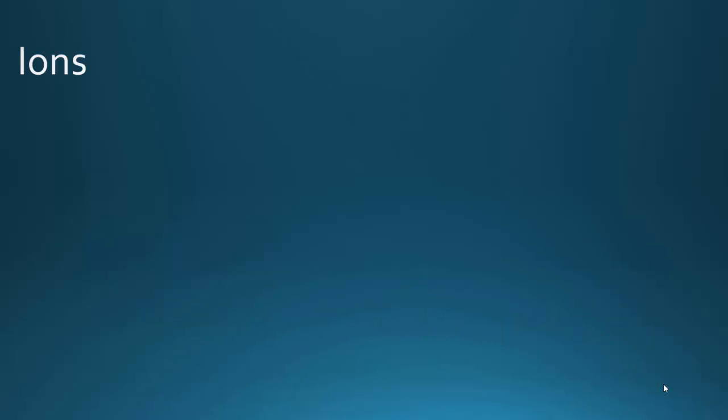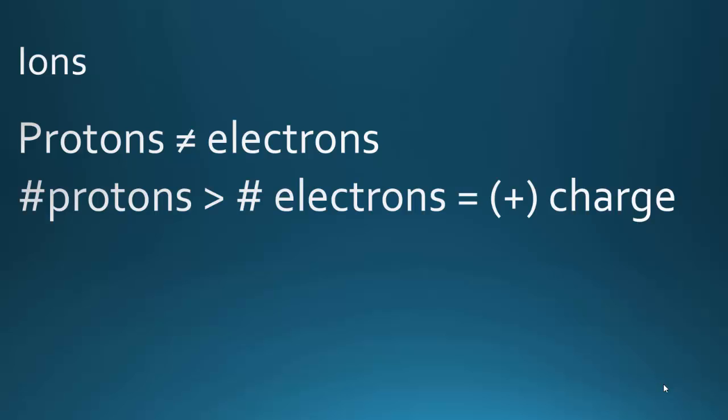Just a real quick review: when you have an ion, the protons don't equal the electrons. If the number of protons is greater than the number of electrons, then the ion will have a positive charge and we call that a cation. If the protons are less than the number of electrons, you have a negative charge, and that is an anion.